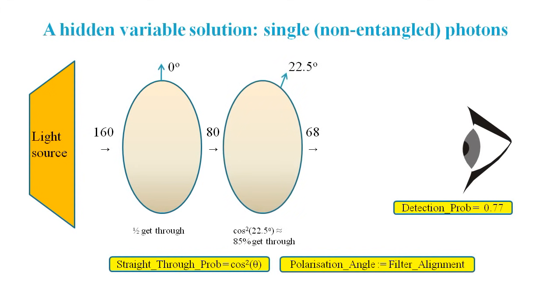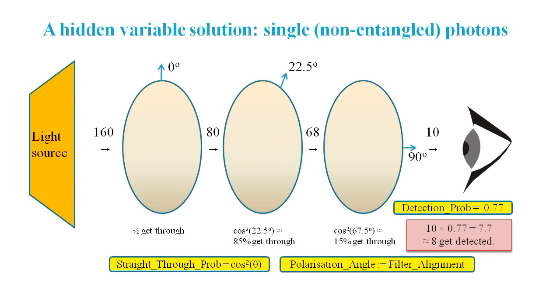So if we introduce a second filter with an alignment of 22.5 degrees, we can easily calculate that, on average, 68 out of every 80 will get through. And if we introduce a third filter with an alignment of 90 degrees, then a local variable calculation tells us that, on average, 10 out of 68 will get through. And about 77 out of every 100 that reach the detector will be detected.